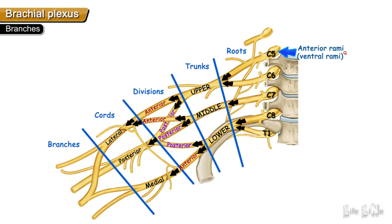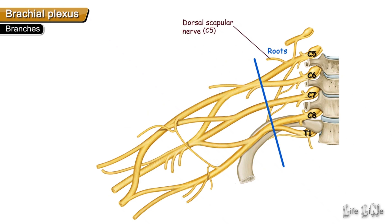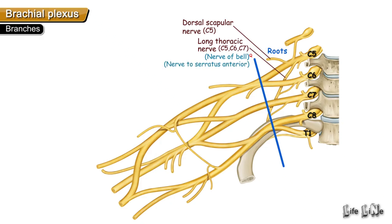Branches from the brachial plexus can arise from the roots, trunks, and cords, but there are no branches from the divisions. The branches from the roots are the dorsal scapular nerve, which originates from the C5 root, and the long thoracic nerve, also called the nerve of Bell or the nerve to serratus anterior, which takes origin from C5, C6, and C7 roots.